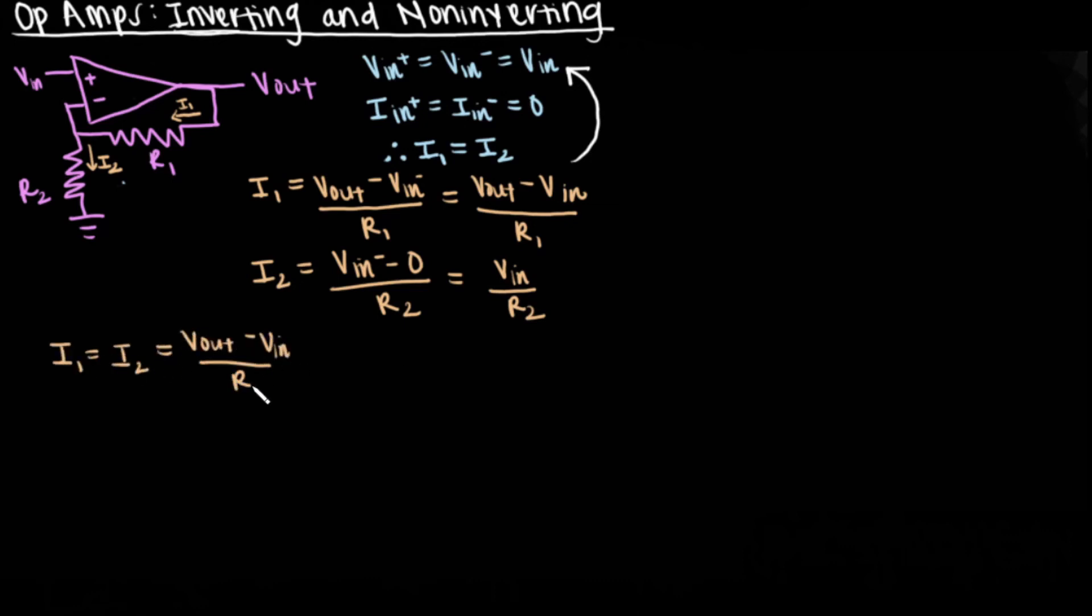Solving for the bottom branch, we take VI minus ground divided by R2. This yields VI negative divided by R2, which is equal to VN divided by R2 using substitution. We can then set the currents equal to each other.